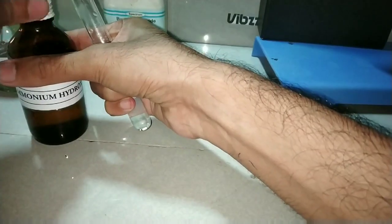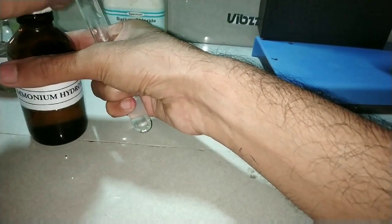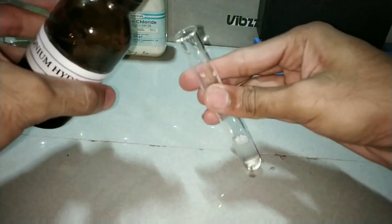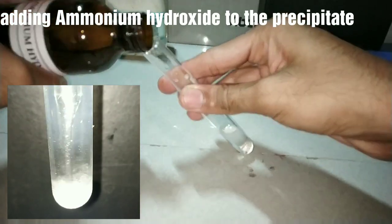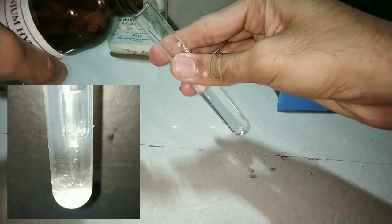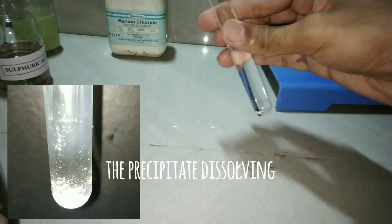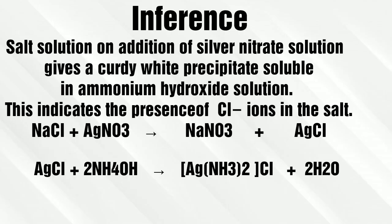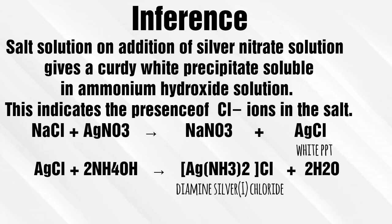The precipitate formed will dissolve in excess ammonium hydroxide. You should take care that ammonium hydroxide should always be in excess. Here I am adding about double the amount of the solution. You can see that immediately the precipitate dissolves. The white precipitate of silver chloride reacts with excess ammonium hydroxide to form diamine silver chloride, which is soluble in water.